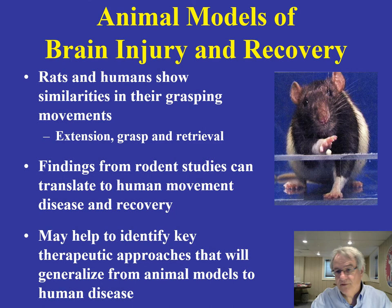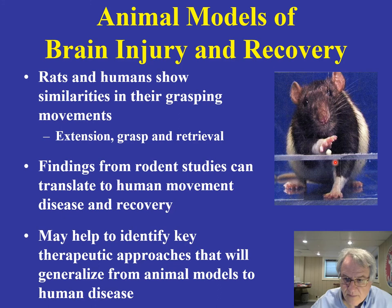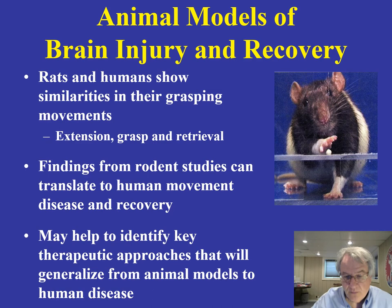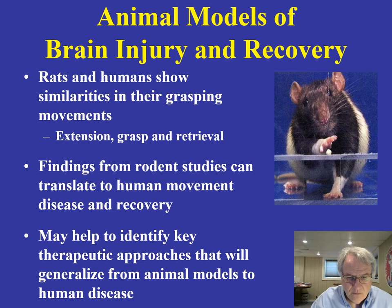There are a number of interesting animal models of brain injury and recovery. If you take a look at this rat reaching for a pellet of food by way of its paw — those grasping movements, the extension, the grasping, the retrieval, and the animal putting it in its mouth — those are very similar to what we see in human beings.